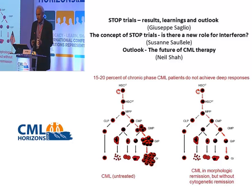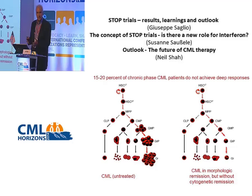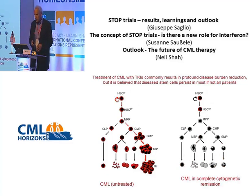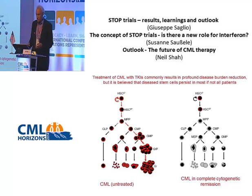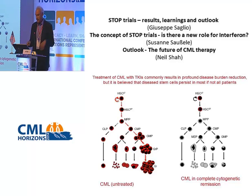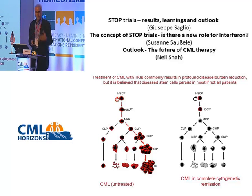If a patient starts TKI therapy and has morphologic remission — meaning their white blood cell count comes down to normal — but no cytogenetic response, BCR-ABL is still present in all the cells but the number of cells is normal. In patients who have a complete cytogenetic response, the majority of more mature cells do not have BCR-ABL, because normal stem cells are feeding in. But we do have persistence of hematopoietic stem cells that carry BCR-ABL, and this has been the subject of much research in efforts to eradicate this population — which could presumably affect true disease cure.